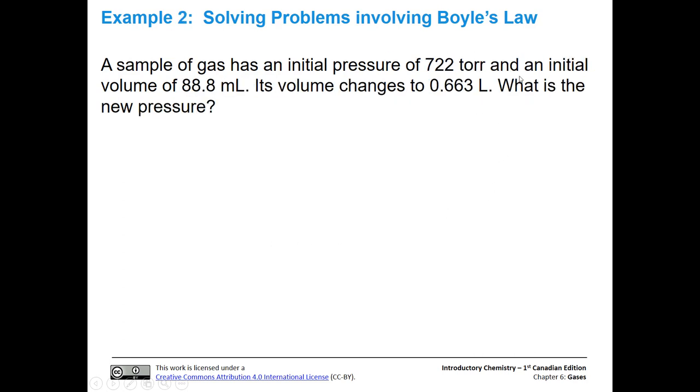So let's do another one. And this time, go ahead and try it, and then we'll go through the answer. So a sample of a gas has an initial pressure of 722 torr, and an initial volume of 88.8 milliliters. Its volume changes to 0.663 liters. What is the new pressure? So we're looking for P2 in this problem.